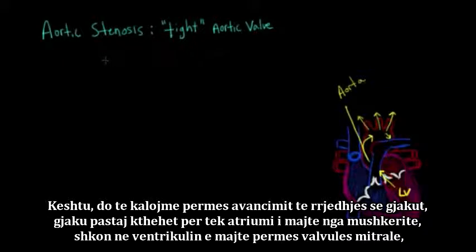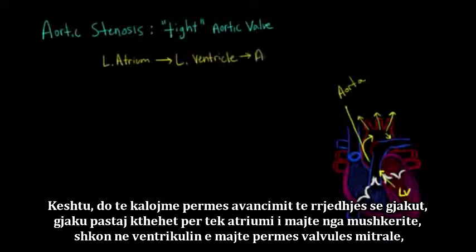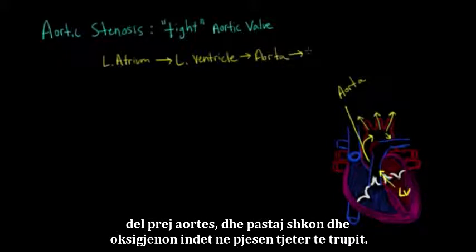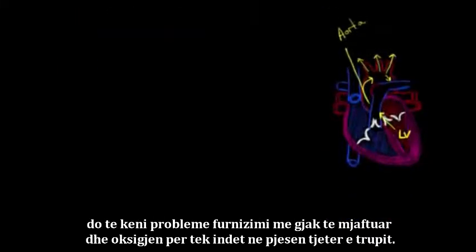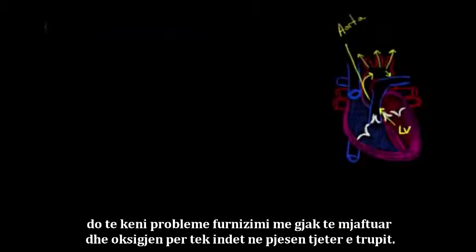To take you through the progression of blood flow, you have blood that returns to the left atrium from the lungs, goes into the left ventricle through the mitral valve, leaves through the aorta, and then goes and oxygenates tissue in the rest of the body. Now, if it can't get from the left ventricle to the aorta due to something such as aortic stenosis, then you're going to have blood backed up in the left ventricle, and you're going to have problems perfusing or supplying enough blood and oxygen to the rest of the body's tissues.